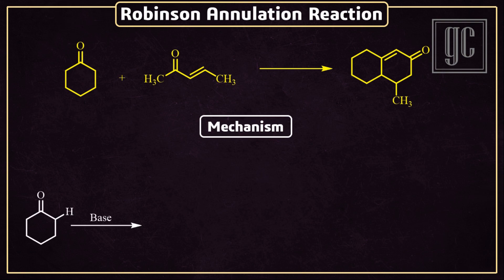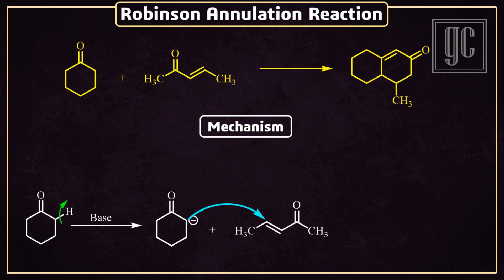In the presence of strong basic conditions, one active alpha hydrogen is removed from the molecule and a carbanion is formed. Now this carbanion undergoes Michael addition and attacks the carbon-carbon double bond.